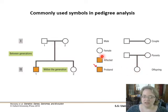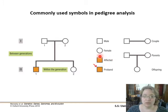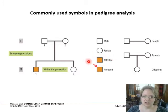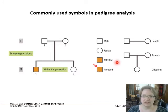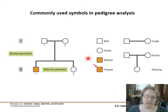Color doesn't matter, but a filled-in square or circle means that person is affected by the genetic disorder. Sometimes there's an arrow indicating what we call the proband — the person that this pedigree analysis is being done on, or the person we're asking the question about.